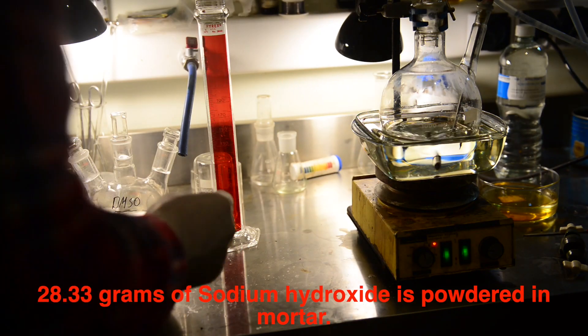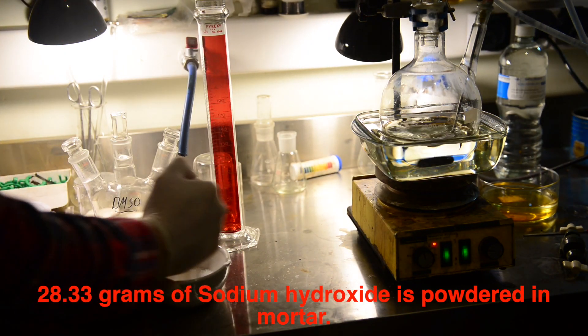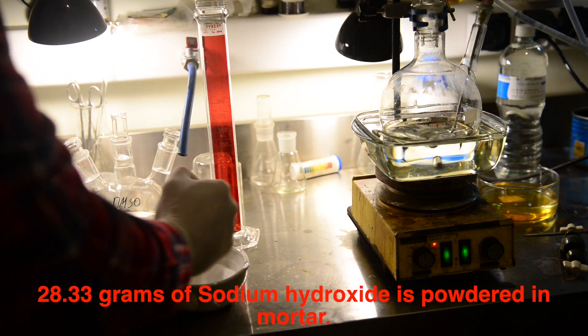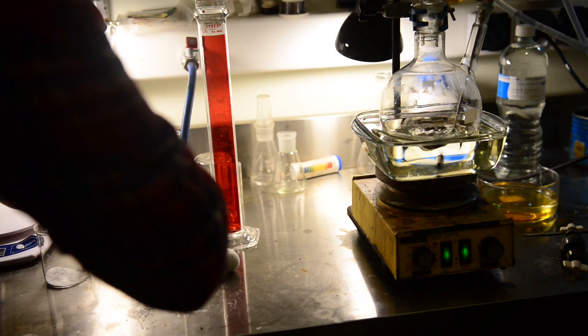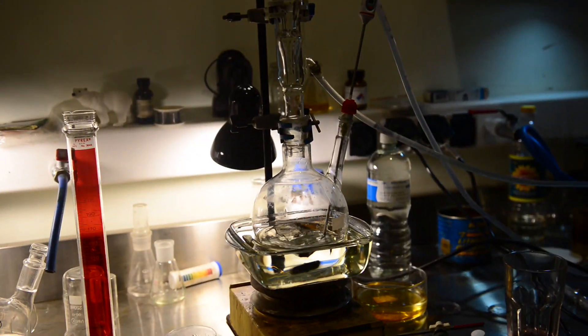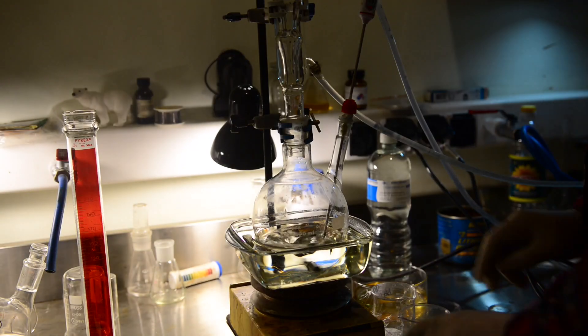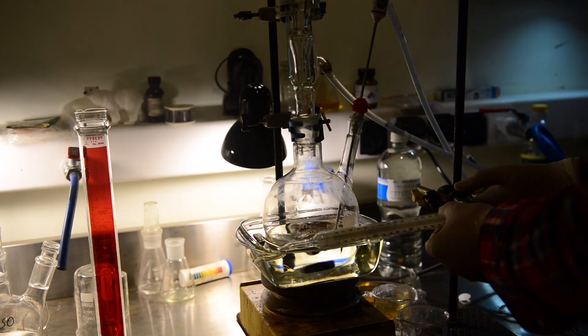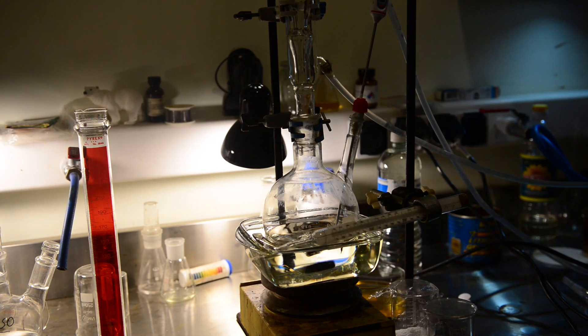We weighed out 28.33 grams of sodium hydroxide. We are grinding it to powder. During the last experiment, I noticed that powdered sodium hydroxide had been more hygroscopic, so we have covered the beaker with powder. According to the procedure, the catechol and sodium hydroxide should be added portion by portion while the solution of dichloromethane is heated.